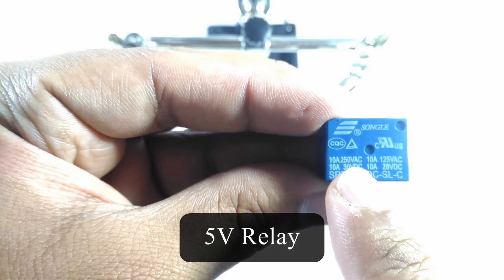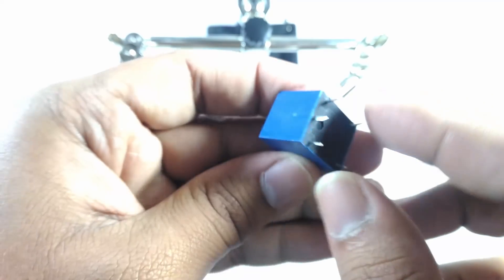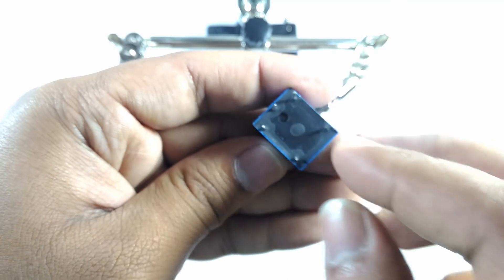We need a 5V relay in order to turn the pump on and off automatically. The wiring diagram for the relay will be in the description.